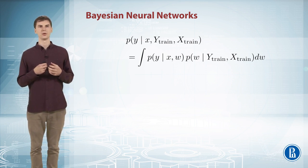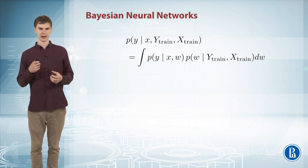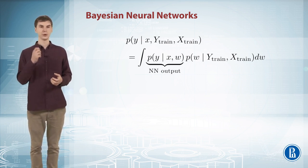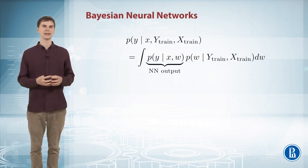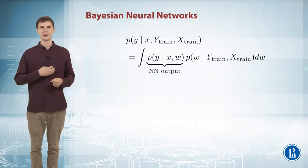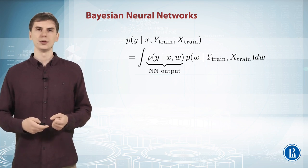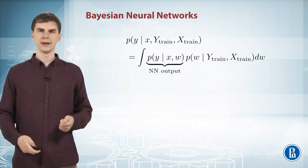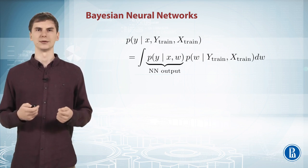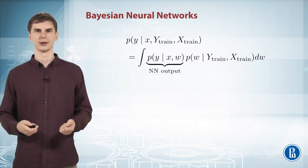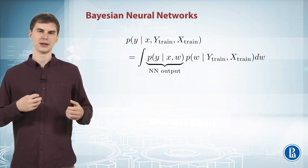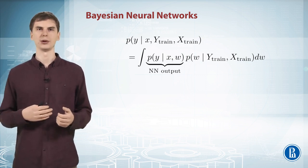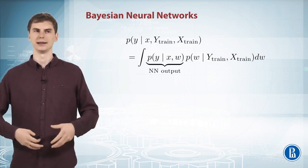So here your p of y given x and w is your usual neural network output. You have your image x, for example, and you pass it through your neural network with parameters w. And then you record its predictions. And you do that for all possible values for the parameters w. So there are infinitely many values for w and for each of them you pass your image through the corresponding neural network and write down the prediction.